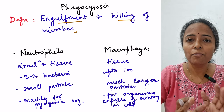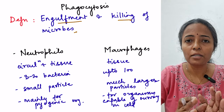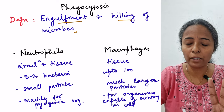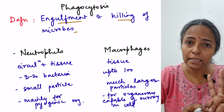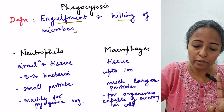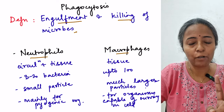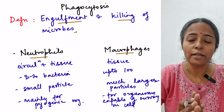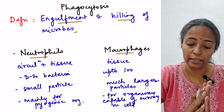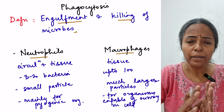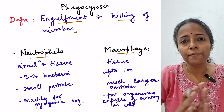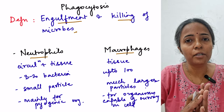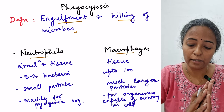This process of phagocytosis is done mainly by two types of cells in our body: neutrophils and macrophages. These are known as professional phagocytes, but there are certain differences between neutrophils and macrophages when they work as phagocytes.